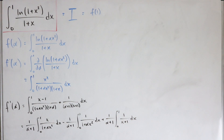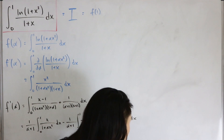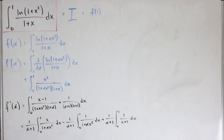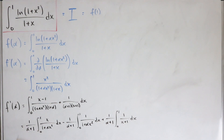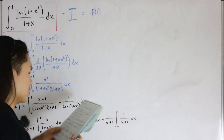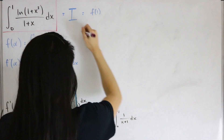The last integral has an antiderivative that's a natural log function. The middle integral gives an arctan function. For the first integral, we use a u-substitution: let u = 1 + αx², so du = 2α x dx. Substituting and factoring out 1/(2α), we simplify things out.